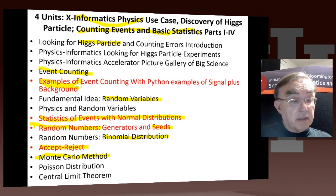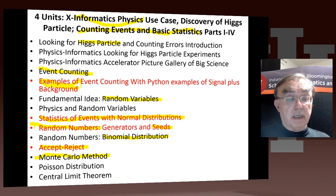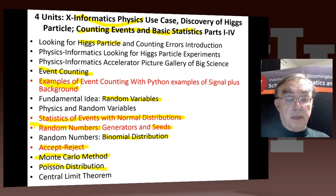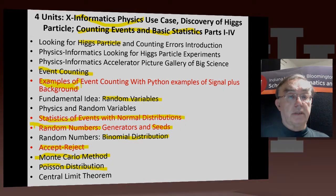The Monte Carlo methods are still related to the data — the only reason you're doing them is because you have data. Then we do another important distribution, the Poisson distribution. And finally we go to the so-called central limit theorem, which underlies a lot of these areas of statistics.